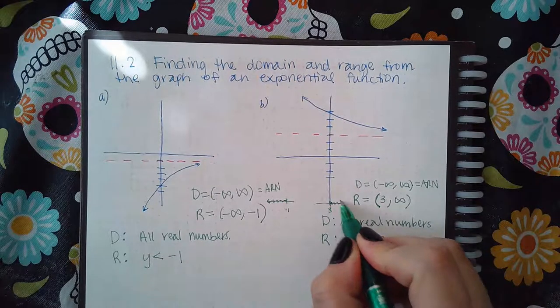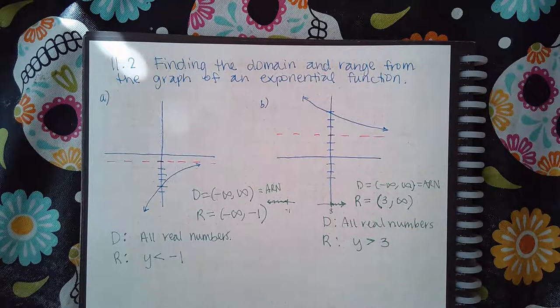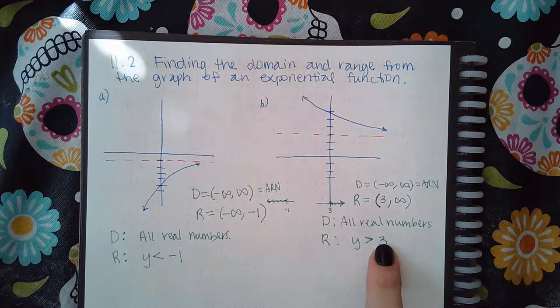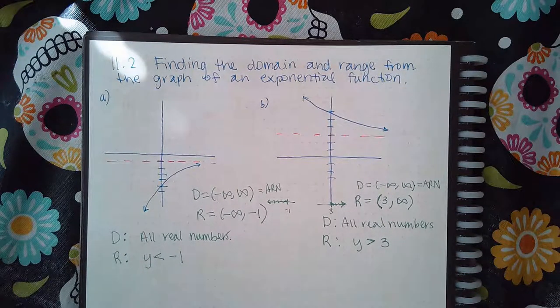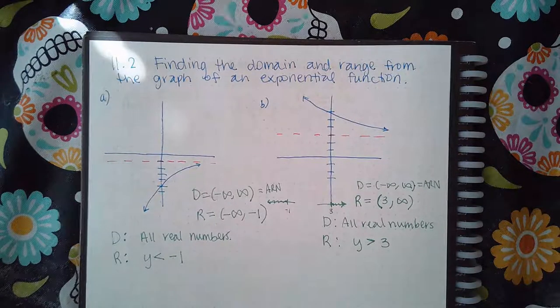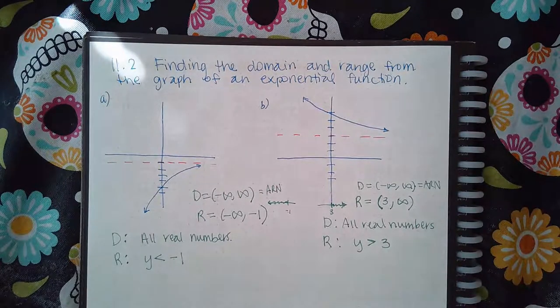Now that as an interval looks like: here's three and it's from three everything toward positive infinity. And so that's everything to the right of three, and that is written as greater than three. But again, because we're talking about range, it needs to be y is greater than three versus x greater than three.